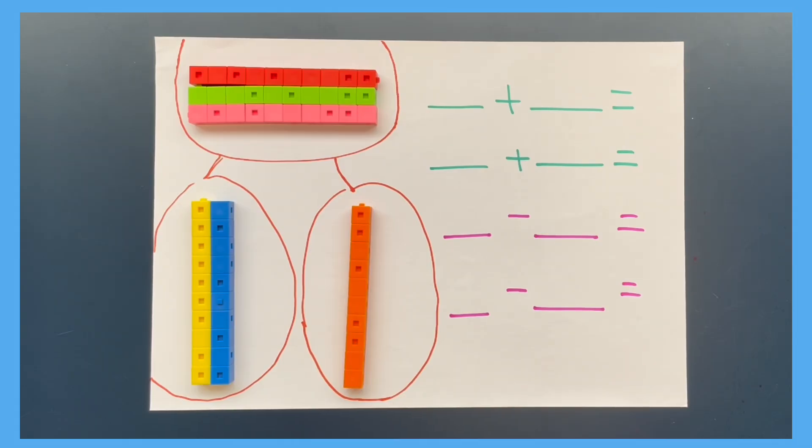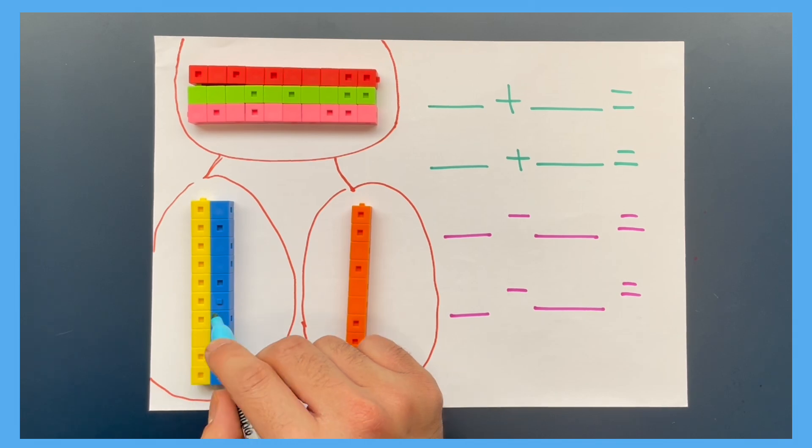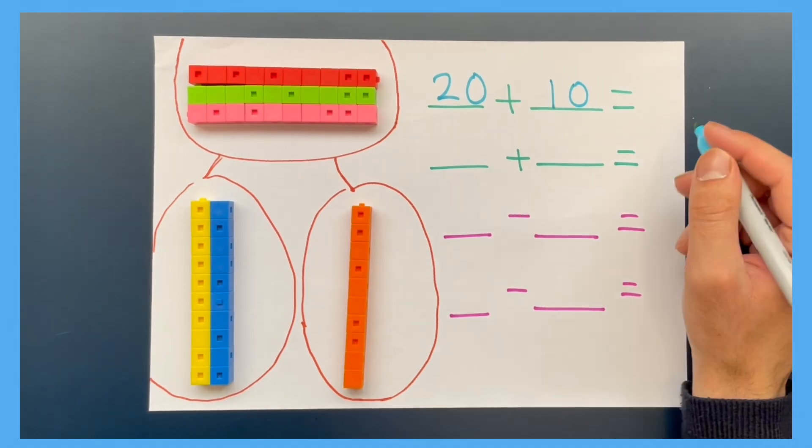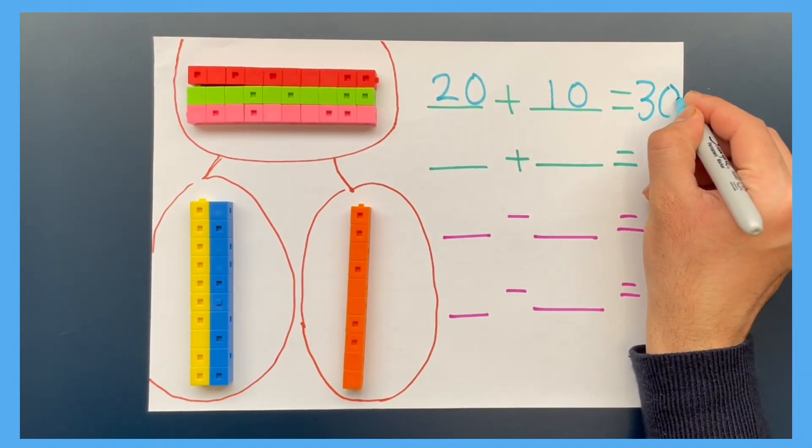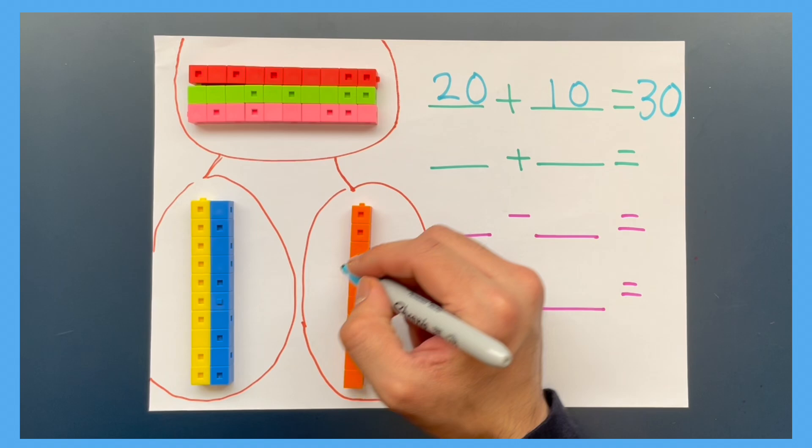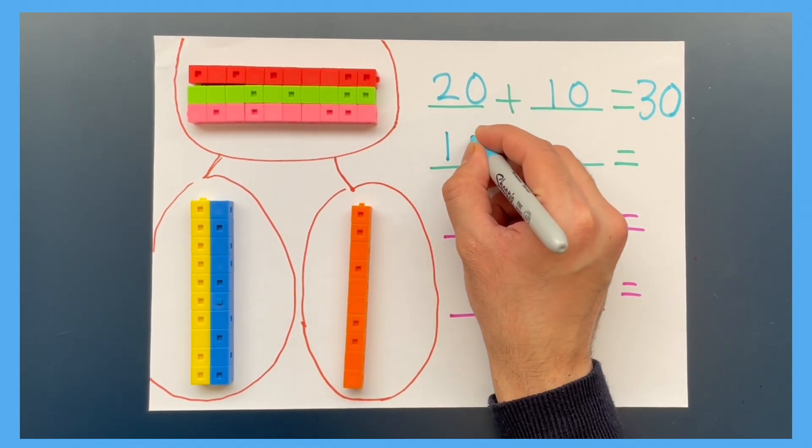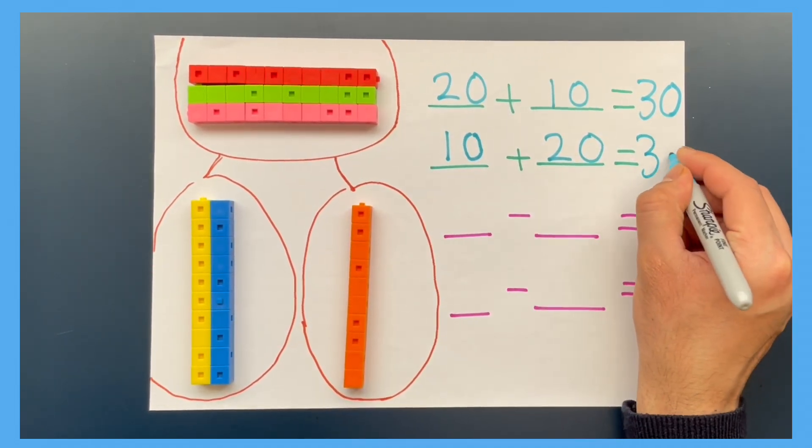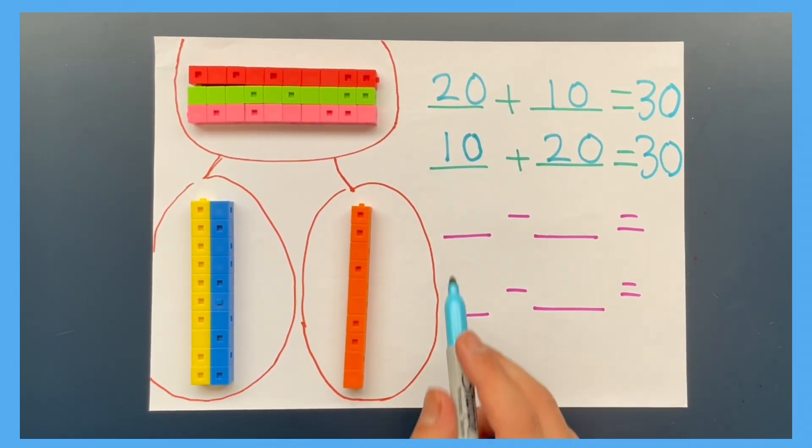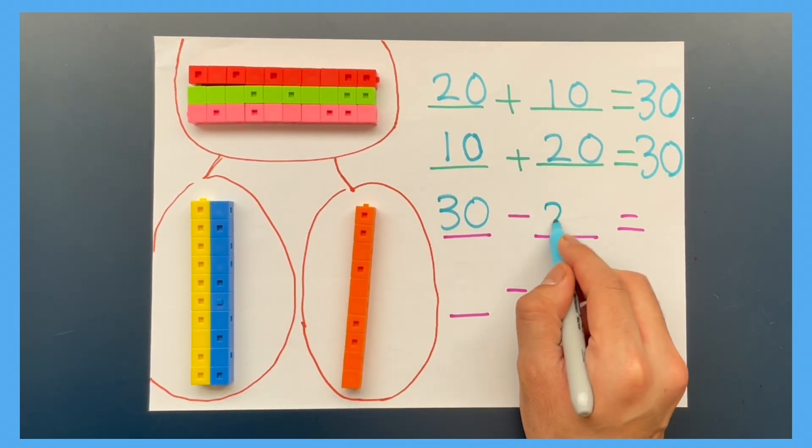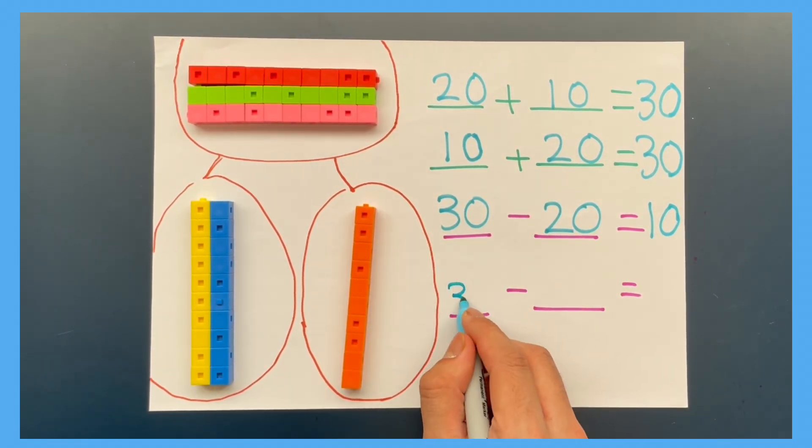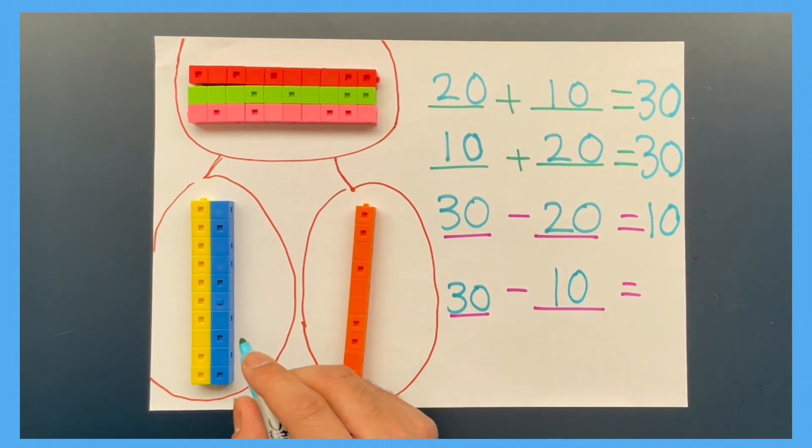Now let's fill in the missing gaps to these questions using the part whole model. Twenty add ten equals thirty. Now remember, addition is commutative, so we can do this the other way around. So ten add twenty equals thirty. For subtraction, thirty take away twenty gives us ten. Also, thirty take away ten equals twenty.